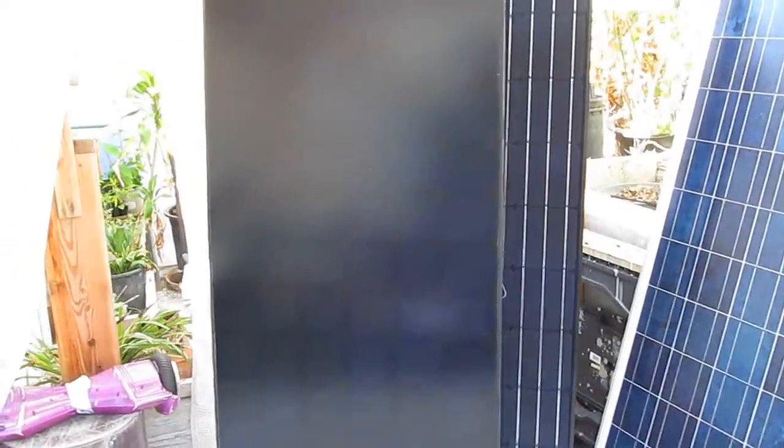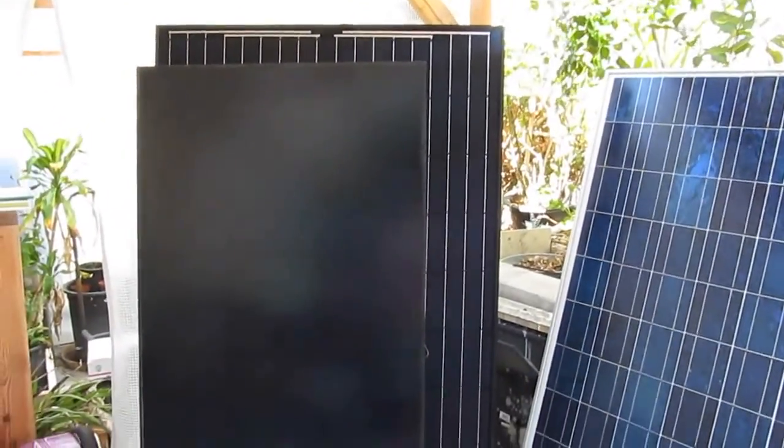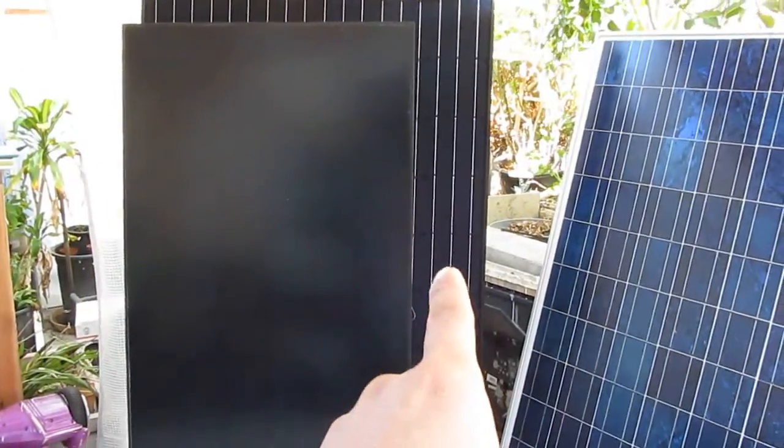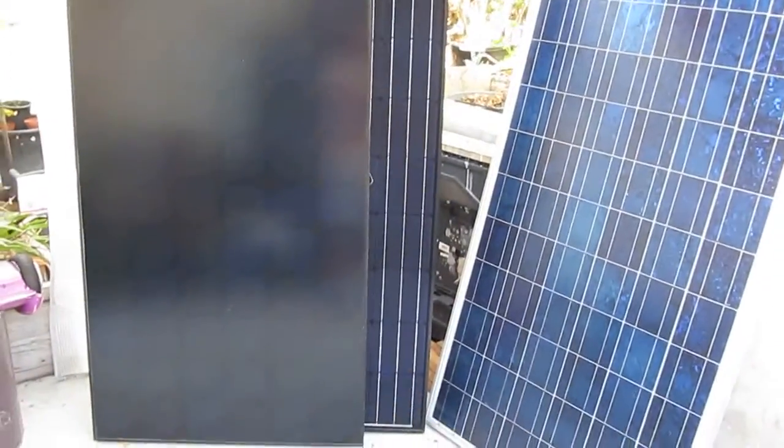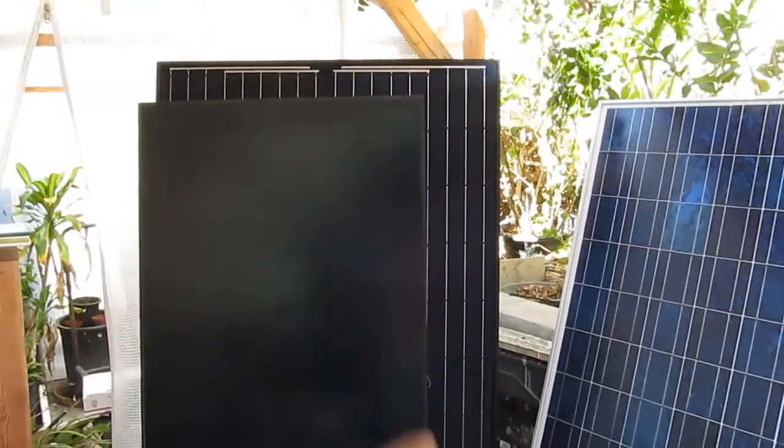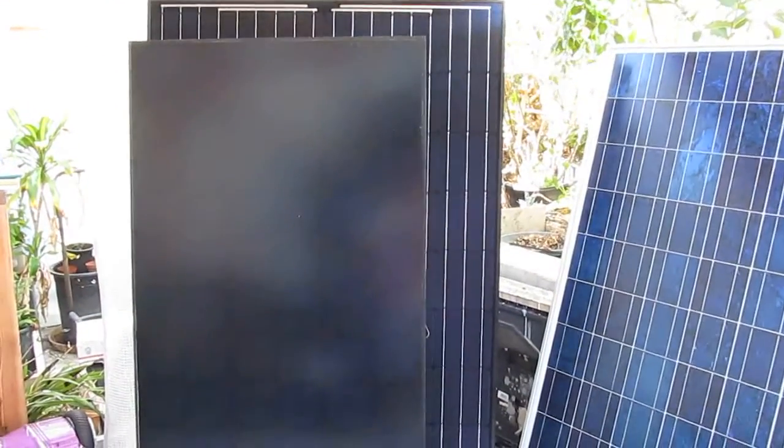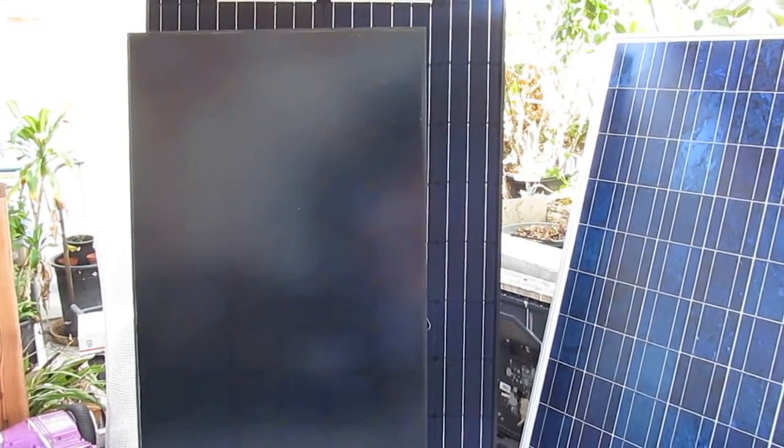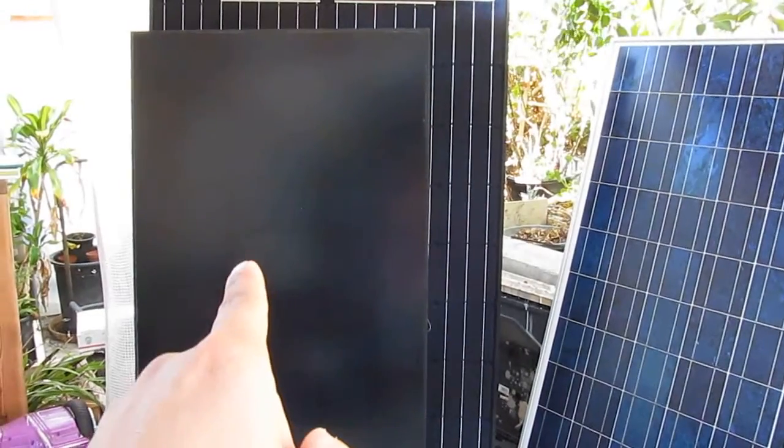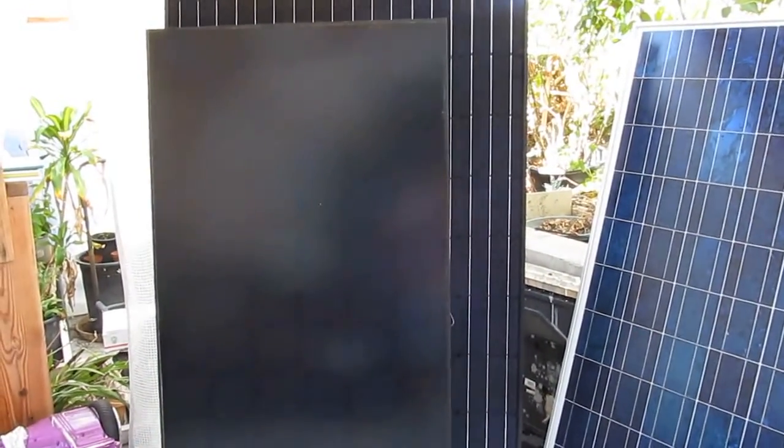So I'm going to zoom out to show you the size relatively compared between the two panels. As you can see, the 270-watt panel is just a little bit bigger. And it's, you know, 55 watts more than this panel on the front Sun Power panel.